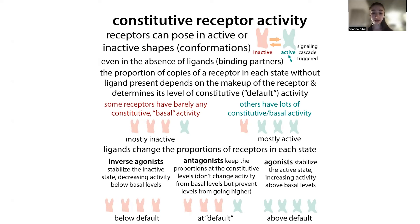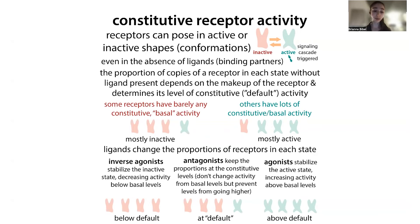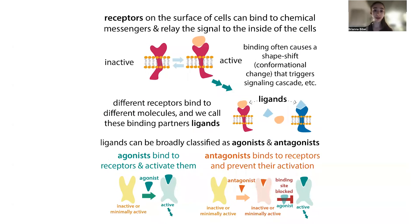This is an important concept because these ligands — agonists, antagonists, and inverse agonists — make up important pharmaceutical compounds as well as recreational drugs. A lot of drugs act on receptors because receptors are how cells communicate. They're the first thing drugs encounter when entering the body since they're on the cell membrane. If there's excess signaling, you'd add an antagonist to block activation, or an inverse agonist if you need to reduce it below baseline.